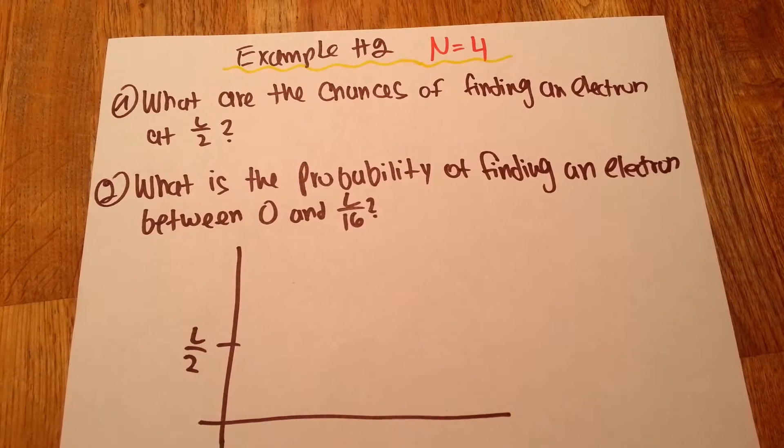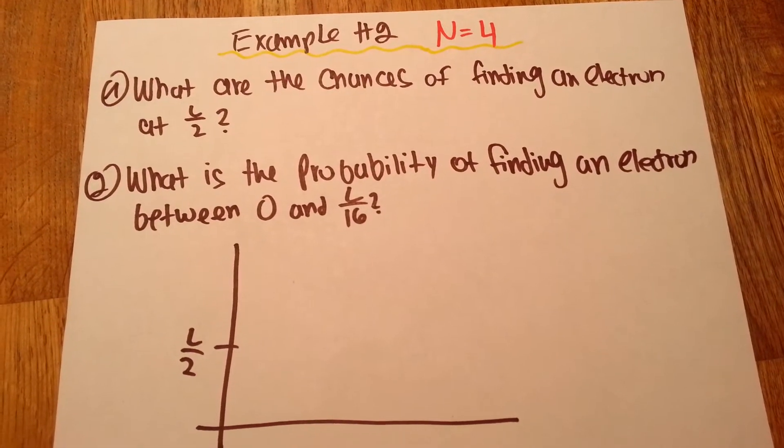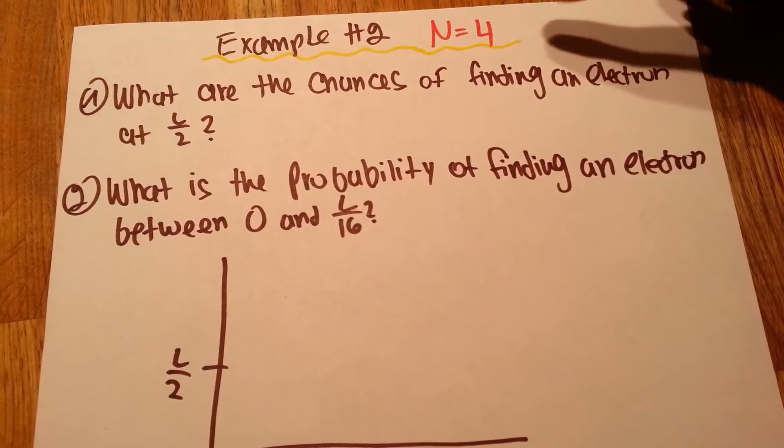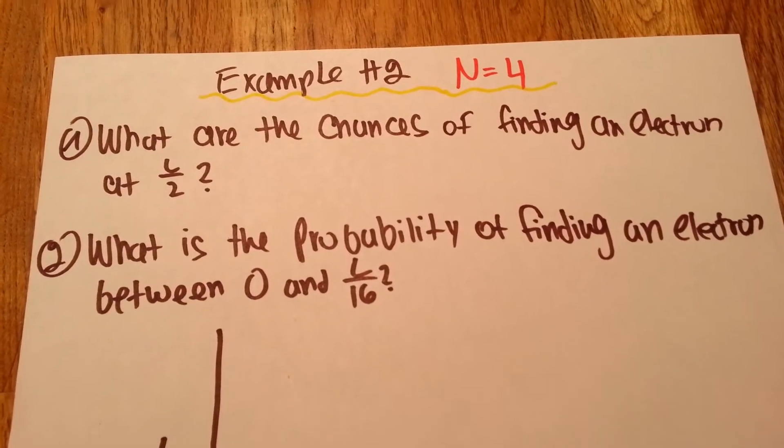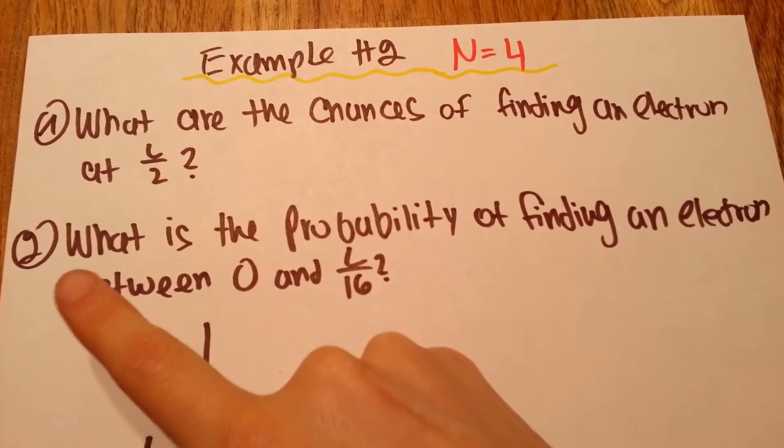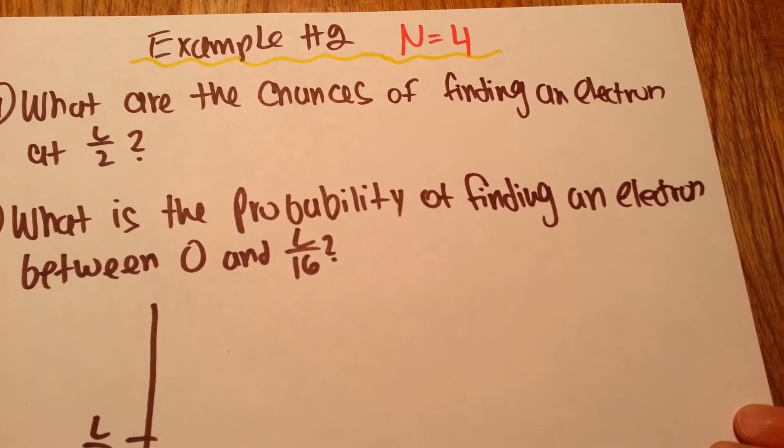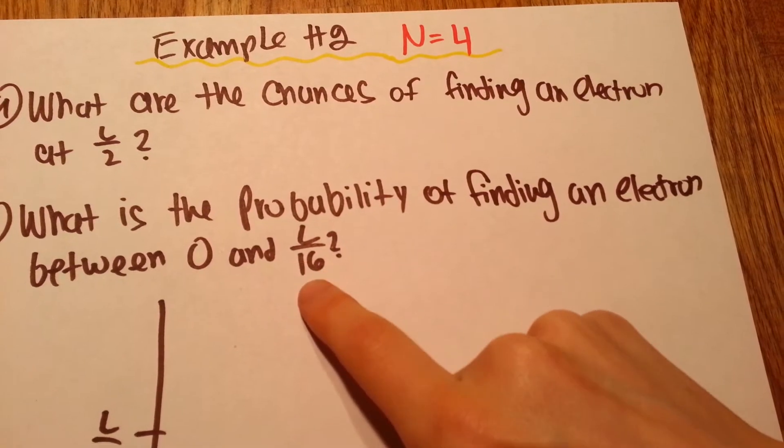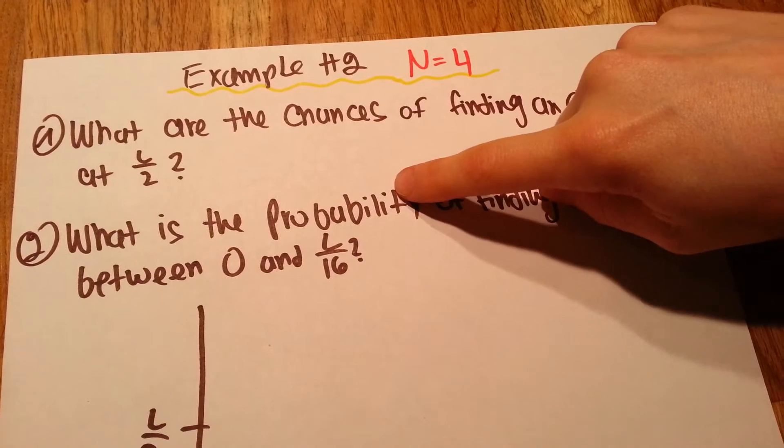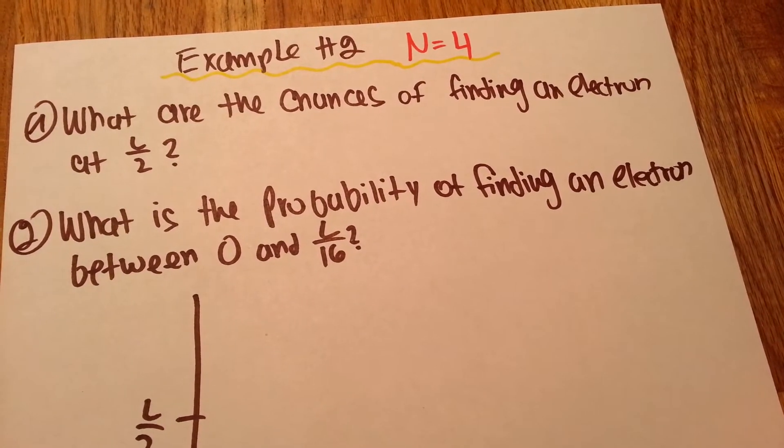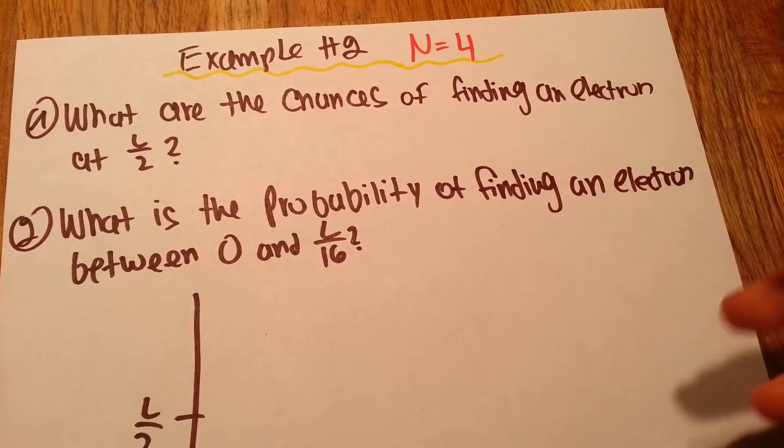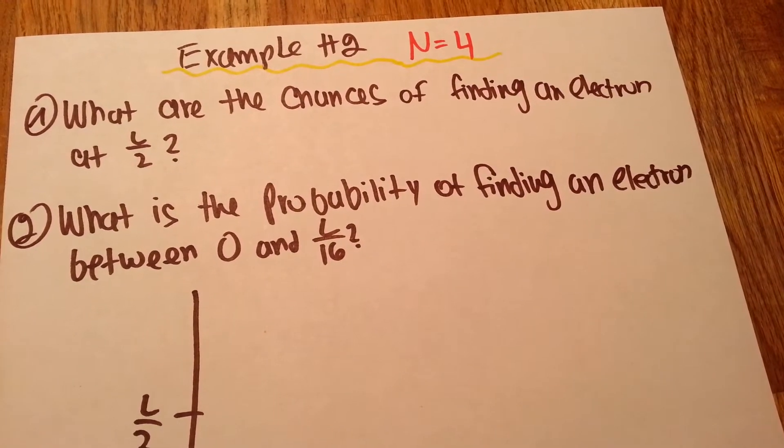Okay, so moving on to our second example and harder example of the particle-in-a-box problem set. Now we have n equals 4, and we have two questions. What are the chances of finding an electron at L divided by 2? And what is the probability of finding an electron between 0 and L divided by 16? Note that we use chances and probability - it's the same thing, essentially. So your teacher can use either or something else that conveys the same meaning.